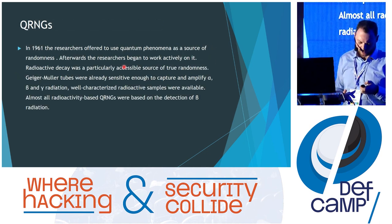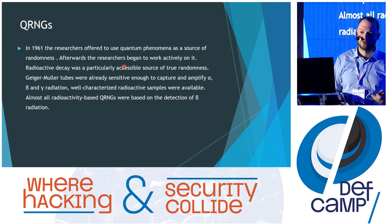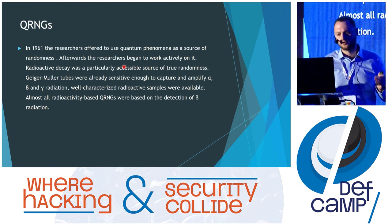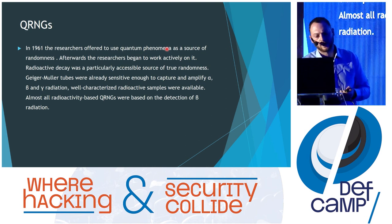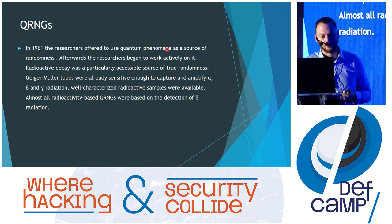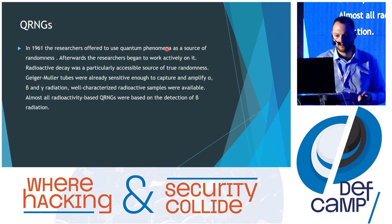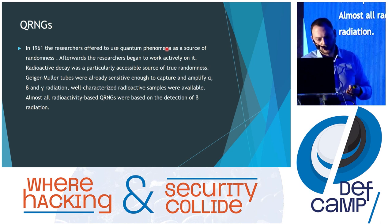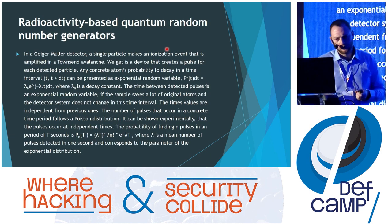What are quantum random number generators? In 1961, researchers offered to use quantum phenomena as a source of randomness and began working on it extensively. At that time, radioactive decay was a particularly accessible source of true randomness. Geiger-Müller tubes were already sensitive enough to capture and amplify alpha, beta, and gamma radiation — though mostly beta radiation was used.